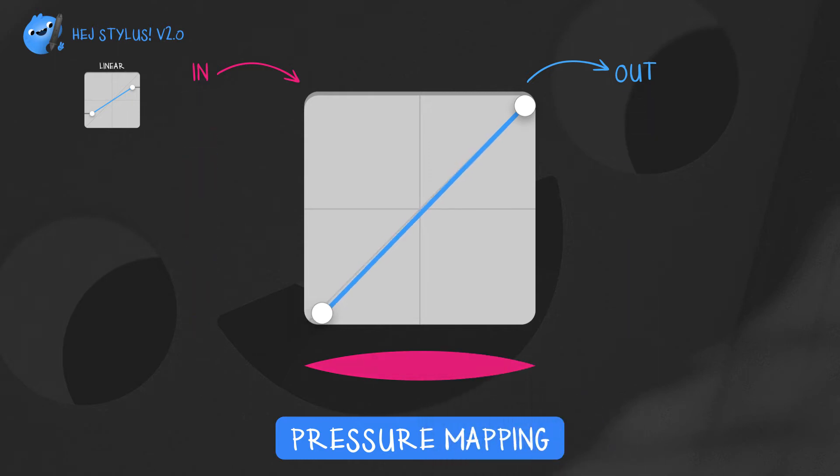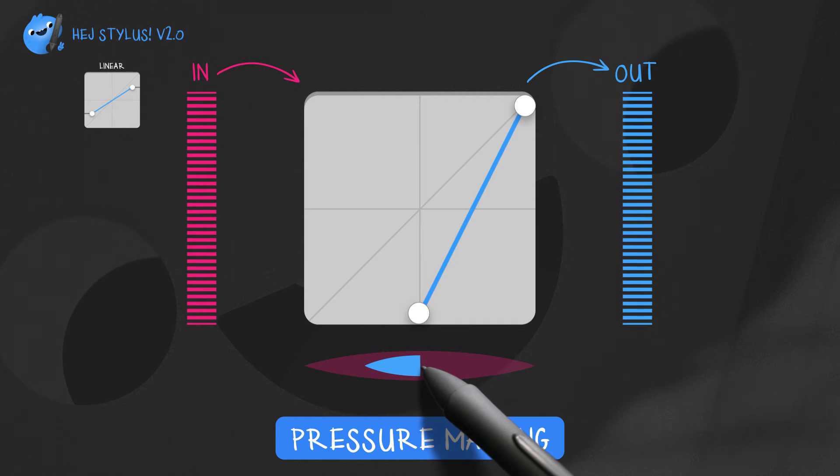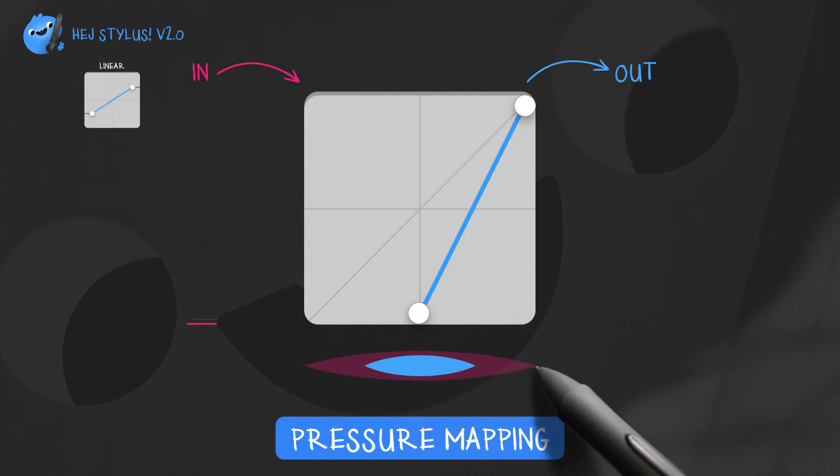Let's see what happens when we move this dot over here. Starting with zero pressure, traveling to 100%, then falling back to zero. This stroke looks different because the transfer function manipulated the pressure values.